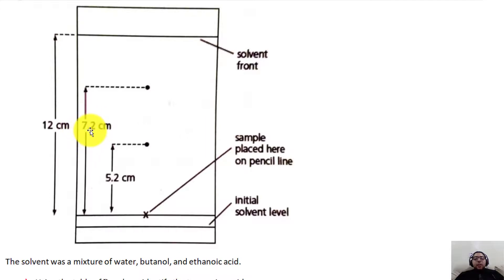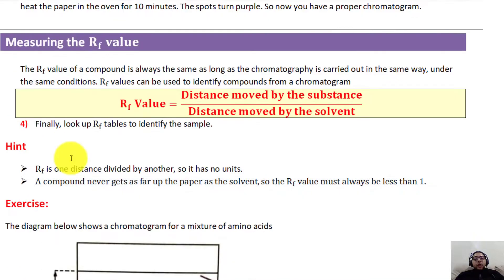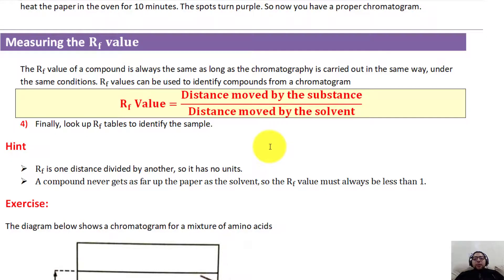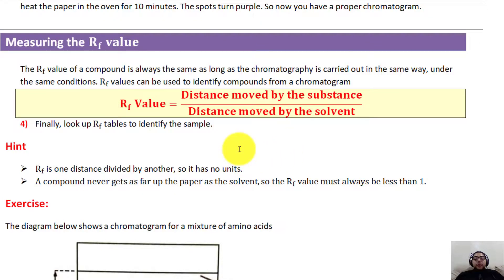Then you measure the distance traveled by the solvent (water), which will travel a little higher — for example, 12 centimeters. To calculate the Rf value: Rf = distance moved by the substance ÷ distance moved by the solvent. The Rf value must always be less than one, because the solvent always travels farther than the dye substances.